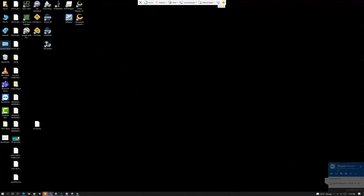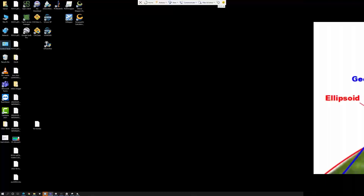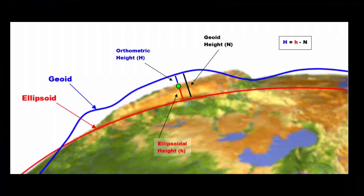Good morning folks. In this short video, I want to cover how to take your LiDAR data that is in an ellipsoidal height scheme like WGS84 and convert that into an orthometric height, or something that uses a datum — sometimes called grid to ground.